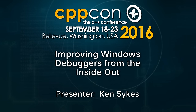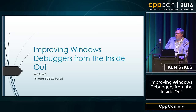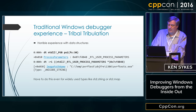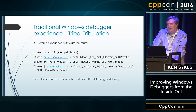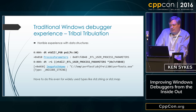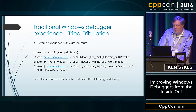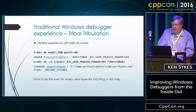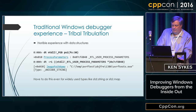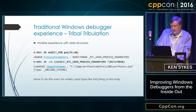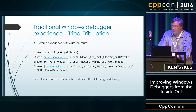Hi everybody, my name is Ken Sykes and I want to talk a few minutes about Windows debuggers and some of the recent changes that we've been making to them to make them more useful. So traditionally Windows debugging has been a tribulation. You either have to dump structures manually like dumping the PEB, and you have to know the structure intimately in order to find the information that you want — even for very common types like std::string or std::map.